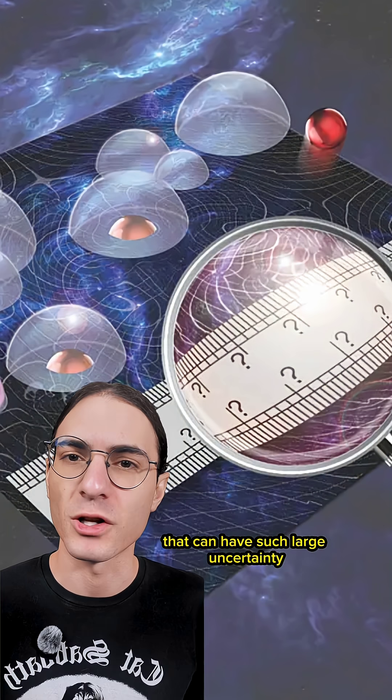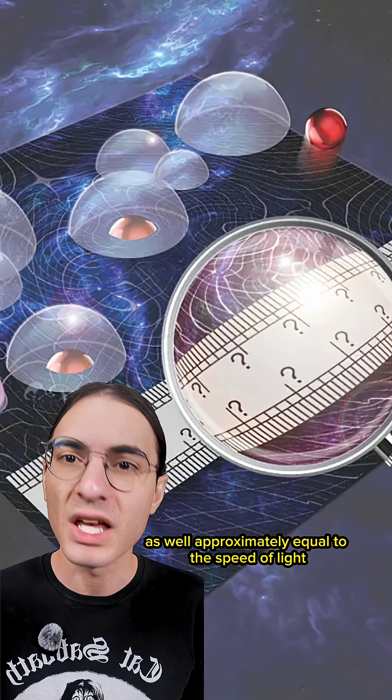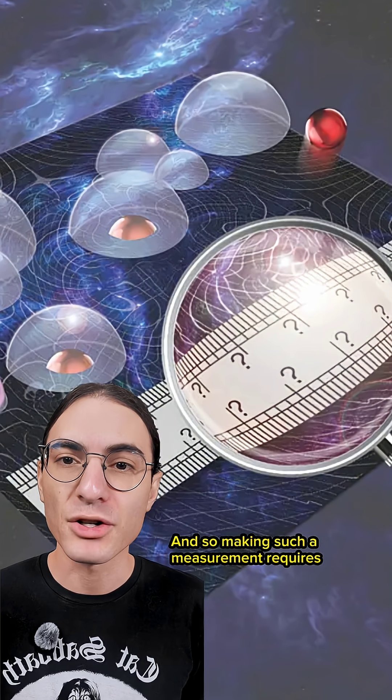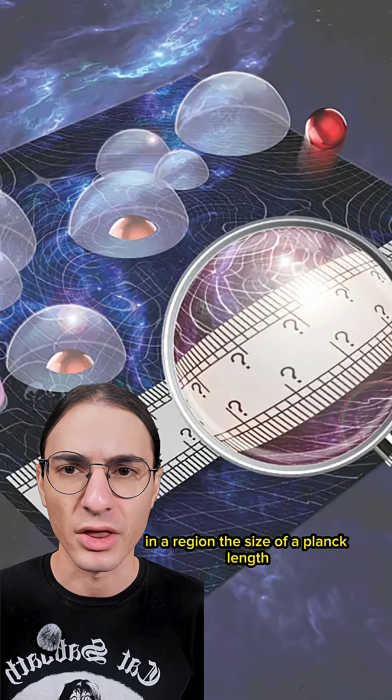But the only systems that can have such large uncertainty are those with extraordinarily high energy as well, approximately equal to the speed of light times the momentum uncertainty. And so making such a measurement requires that you are concentrating that large quantity of energy in a region the size of a Planck length.